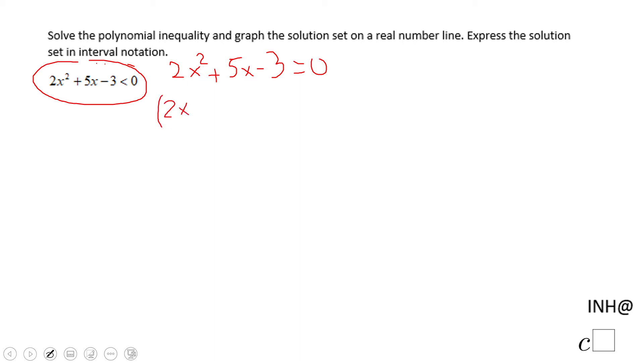The factor form here is 2x minus 1... or plus 1. We're going to see it in a moment. Let me double-check. Yeah. 2x minus 1, x plus 3 equals zero. If you're not sure, FOIL it and check it.